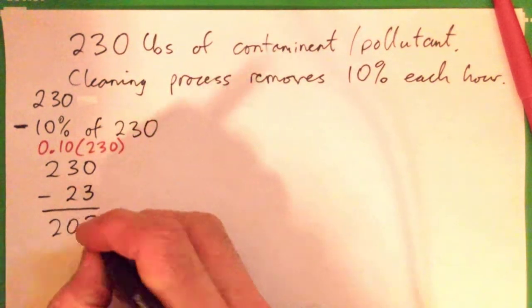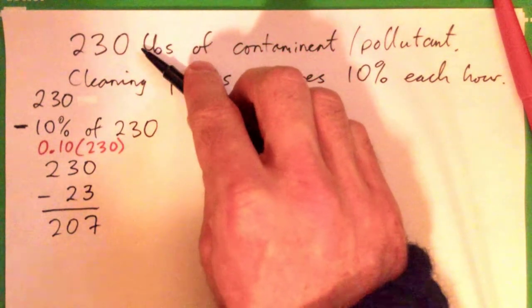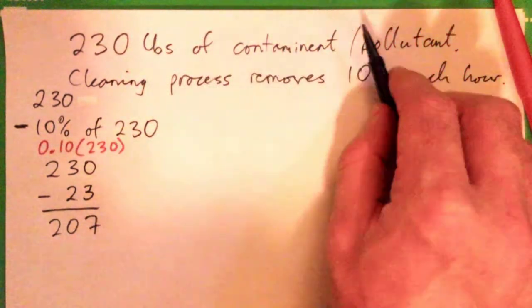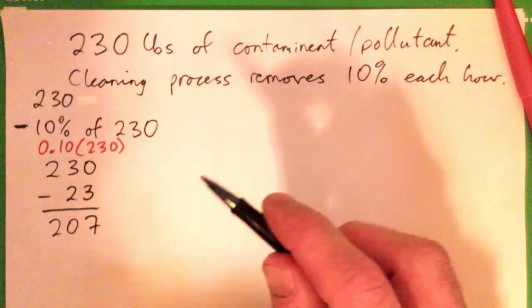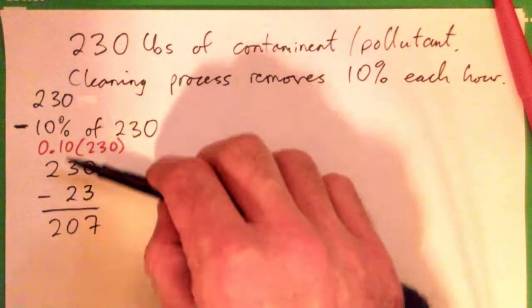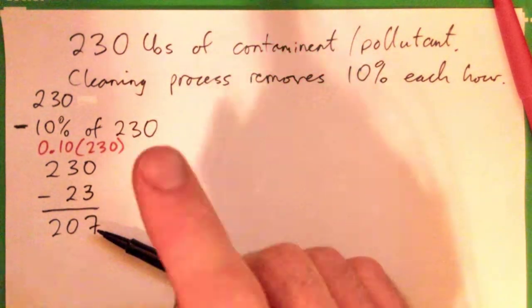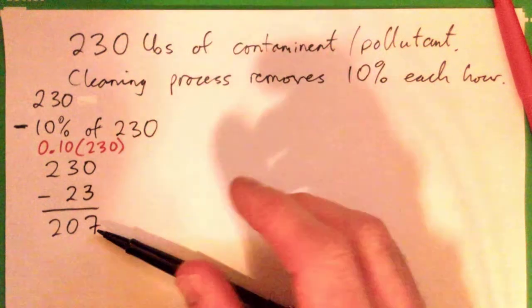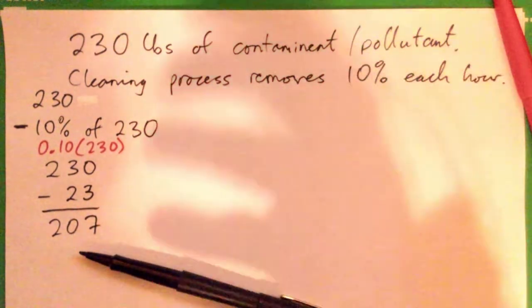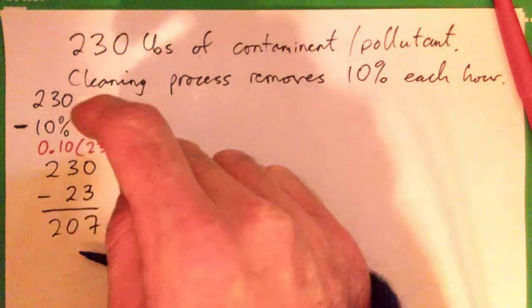So does that make sense that you would have 207 pounds of the oil or the pollutant left after one hour? Now, this is cool. This is fine. The problem is, how do you figure this out for like 10 hours or 20 hours or 35 hours? It's a complicated process because you've got to get 10% of the previous amount.